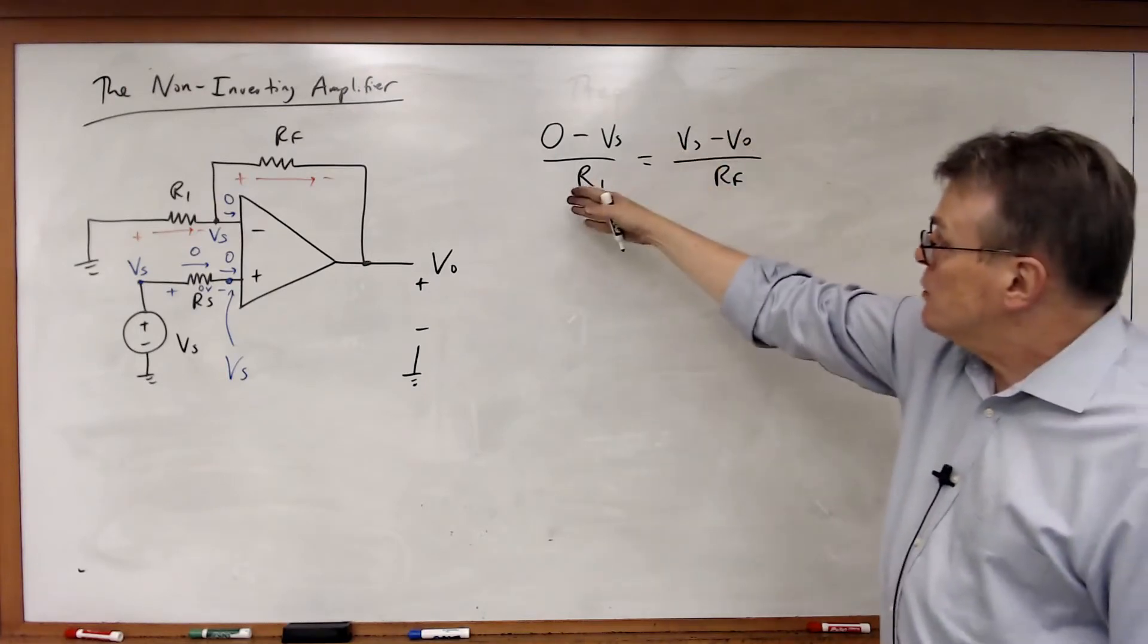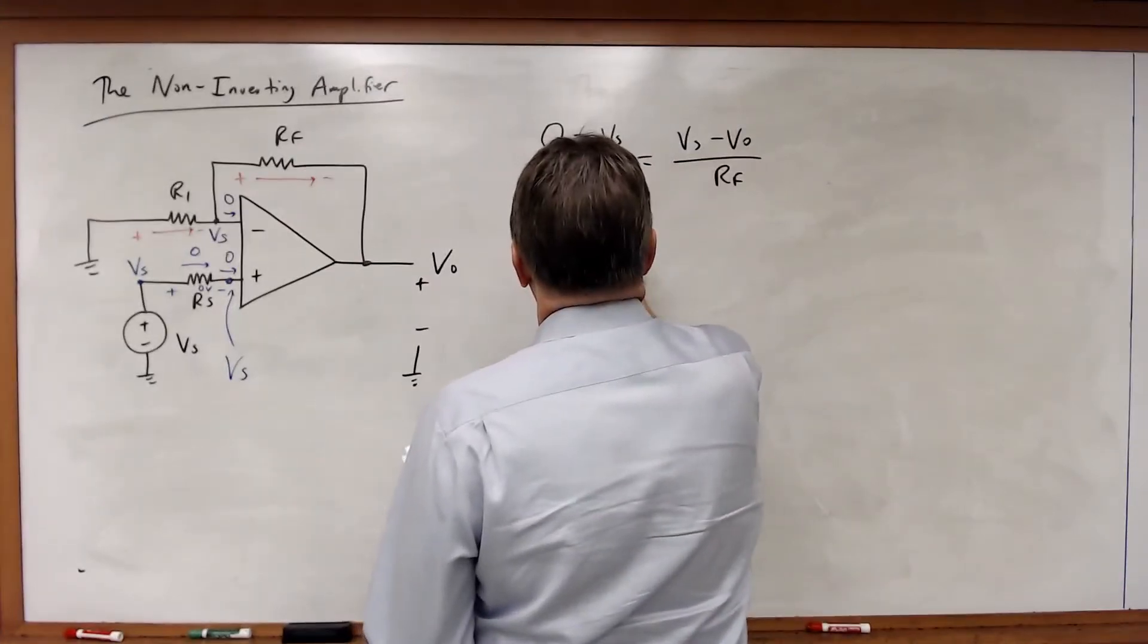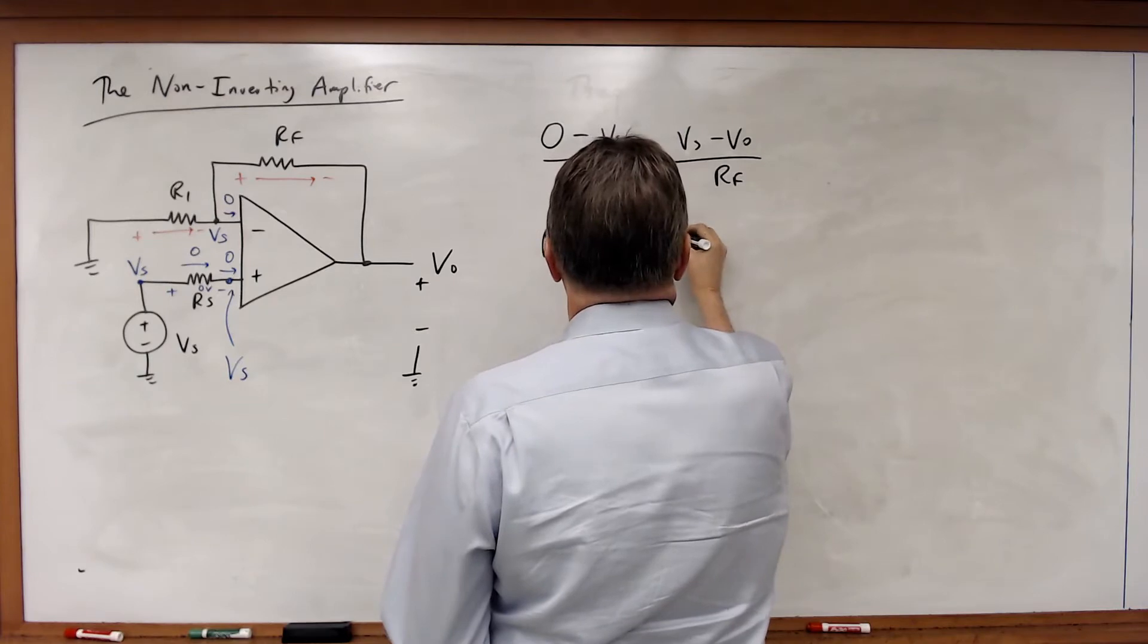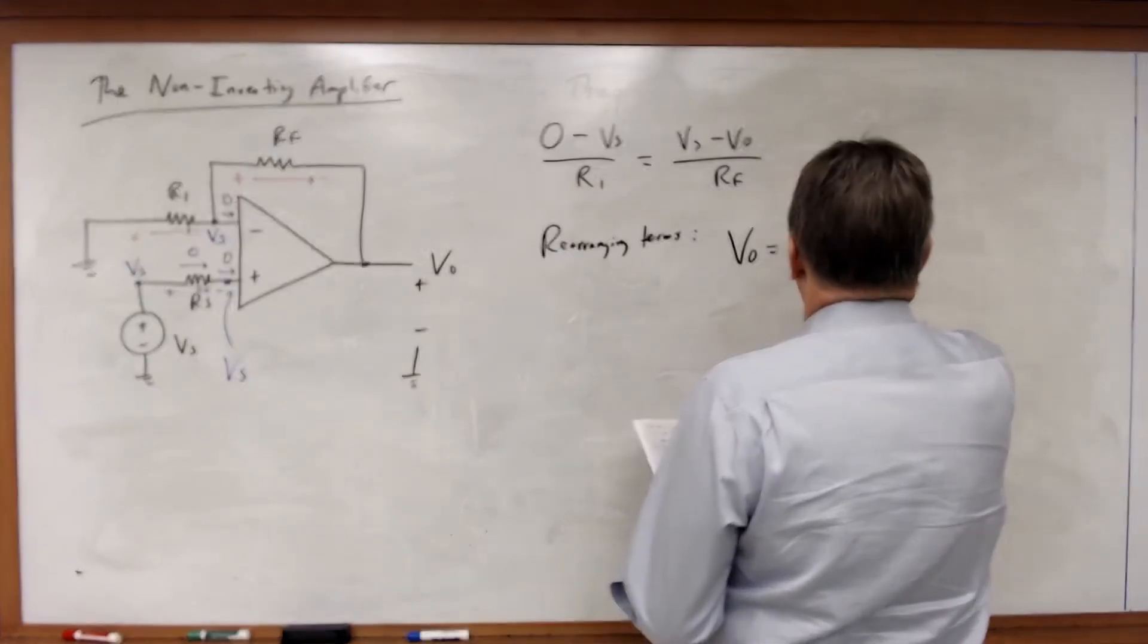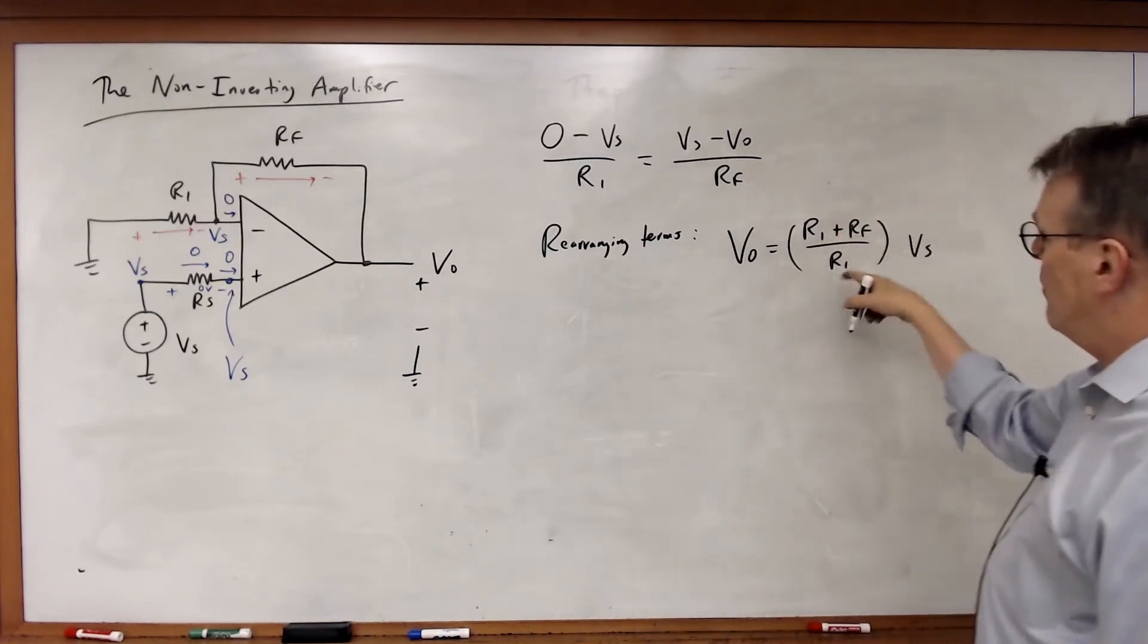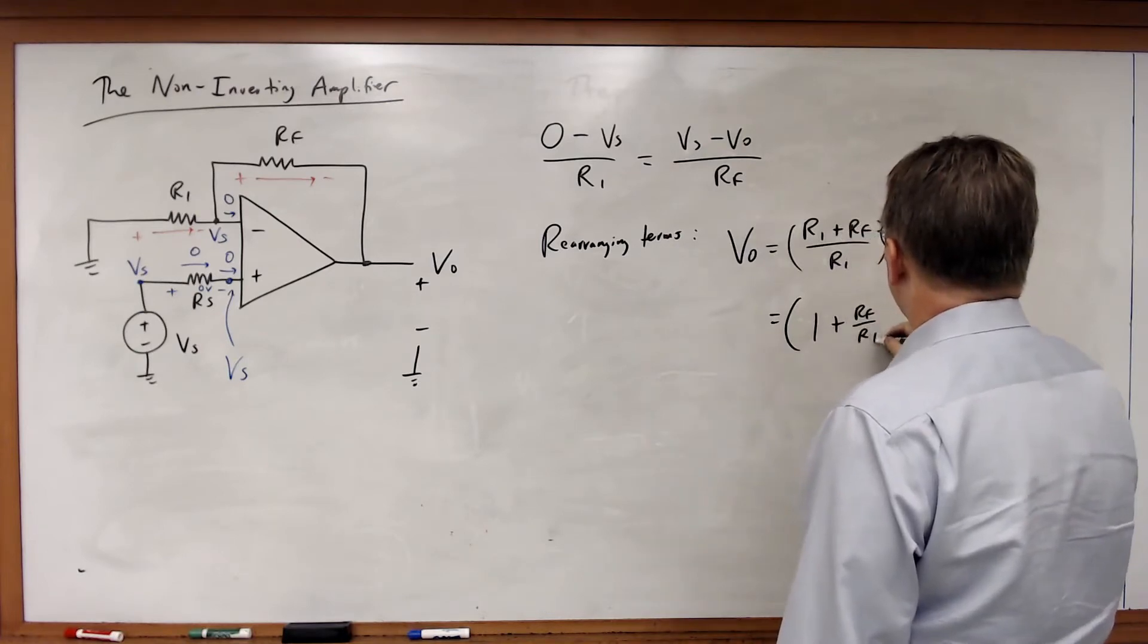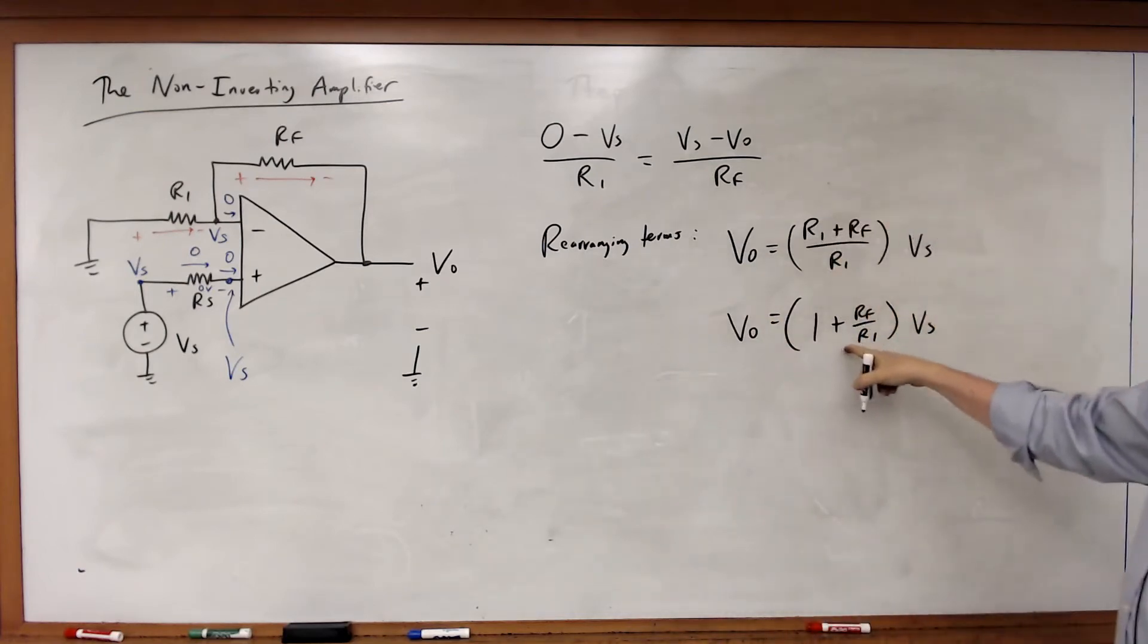Rearrange some terms to bring the VO terms on one side and VS on the other, and what we will get is the following: that VO will be equal to R1 plus RF over R1 times VS or just equal to 1 plus RF over R1 times VS. So VO is equal to 1 plus RF over R1 times VS.